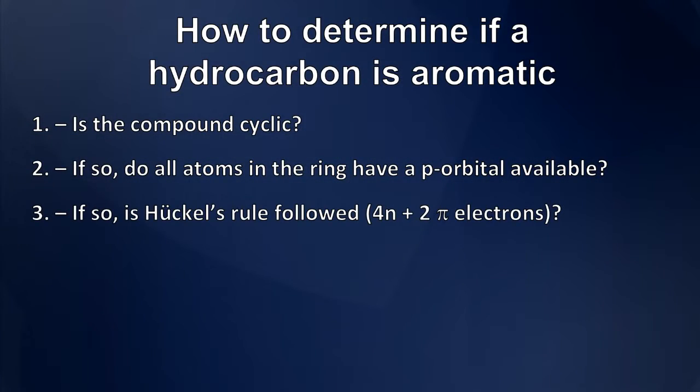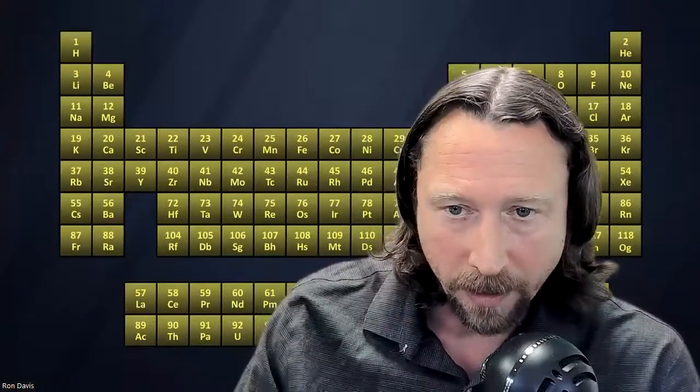And if that's true, is Huckel's rule obeyed? In other words, are there 4n plus 2 pi electrons in the system? 6, 10, 14, and so on.